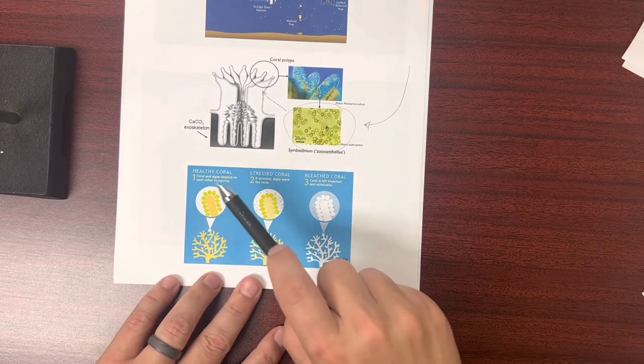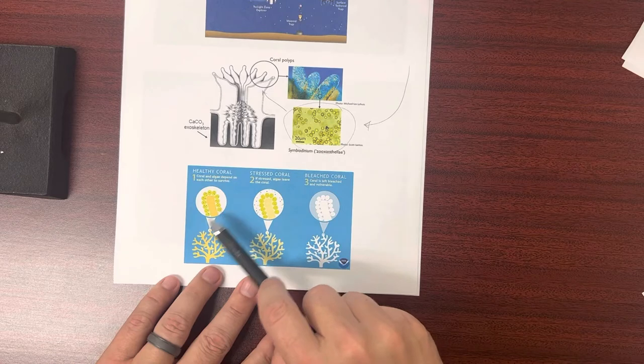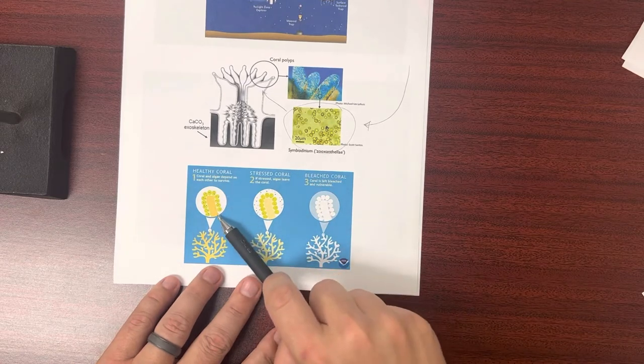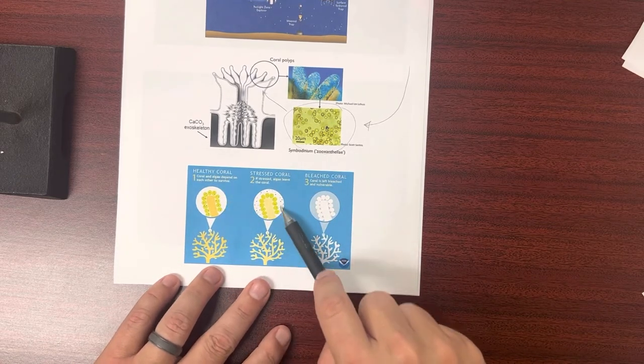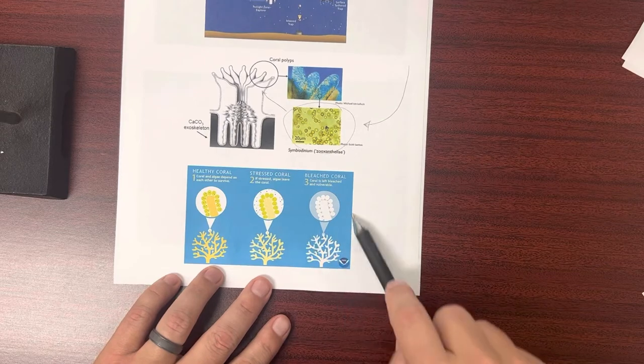But if a coral at the surface is stressed or it dies, this algae gets expelled and it becomes bleached. So we have a bleached coral.